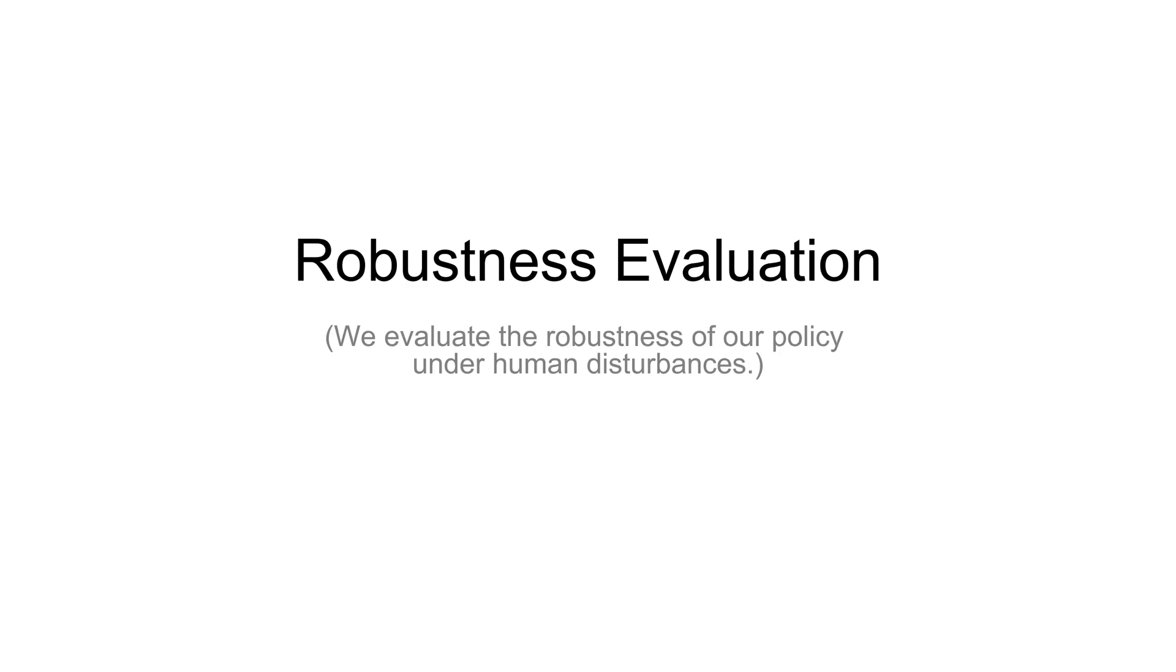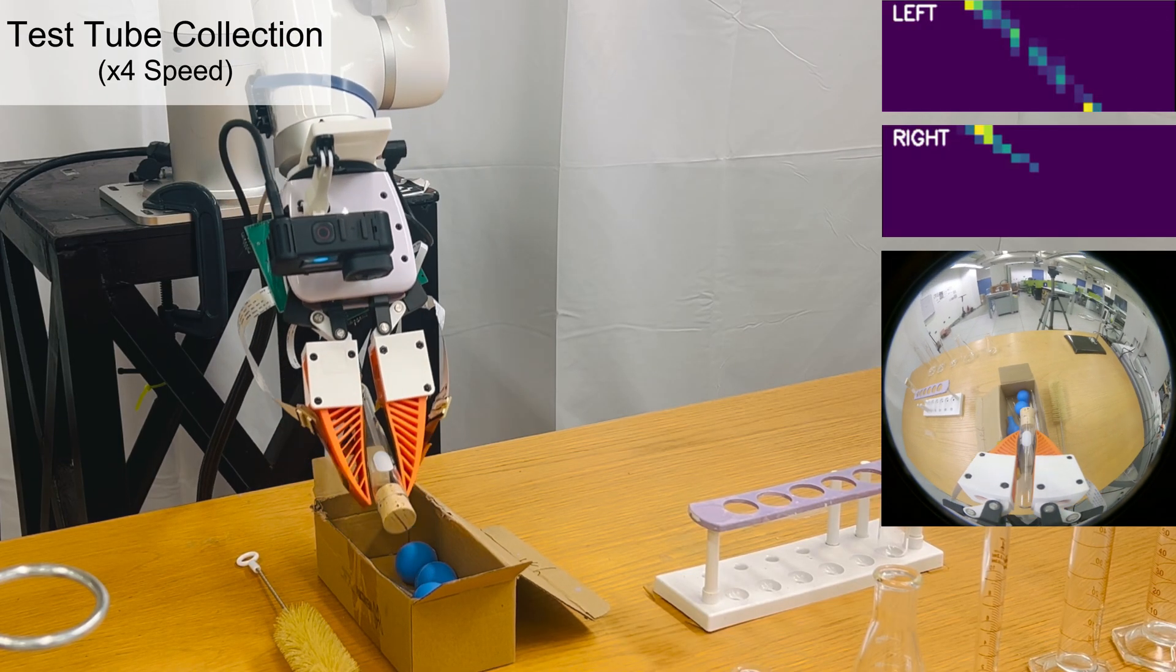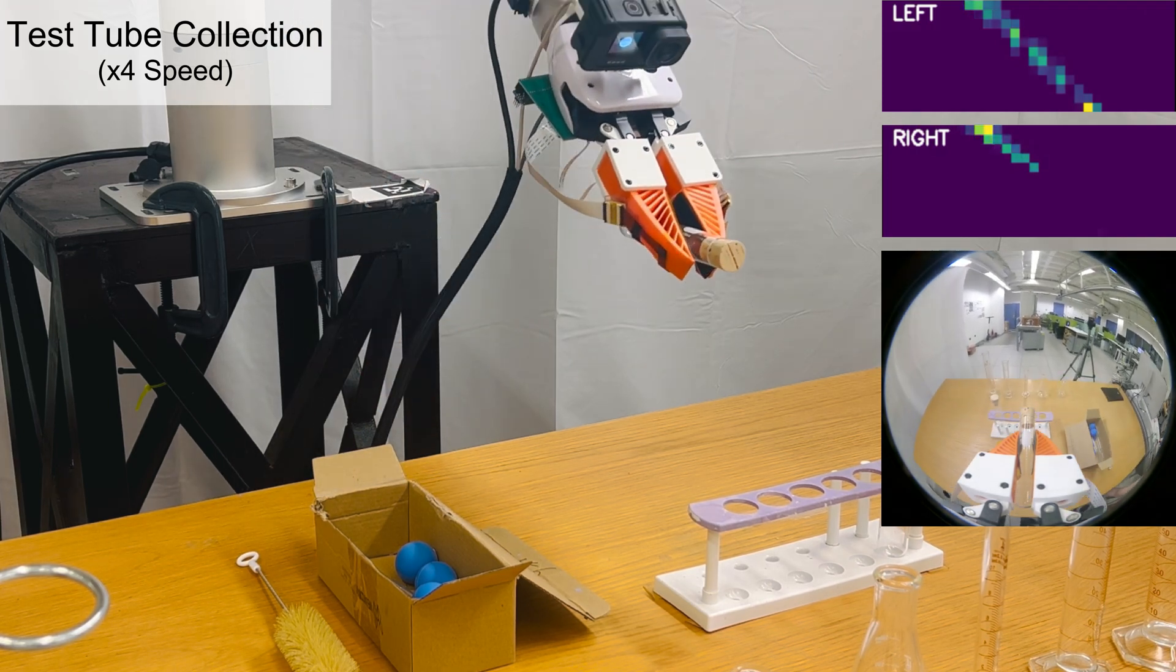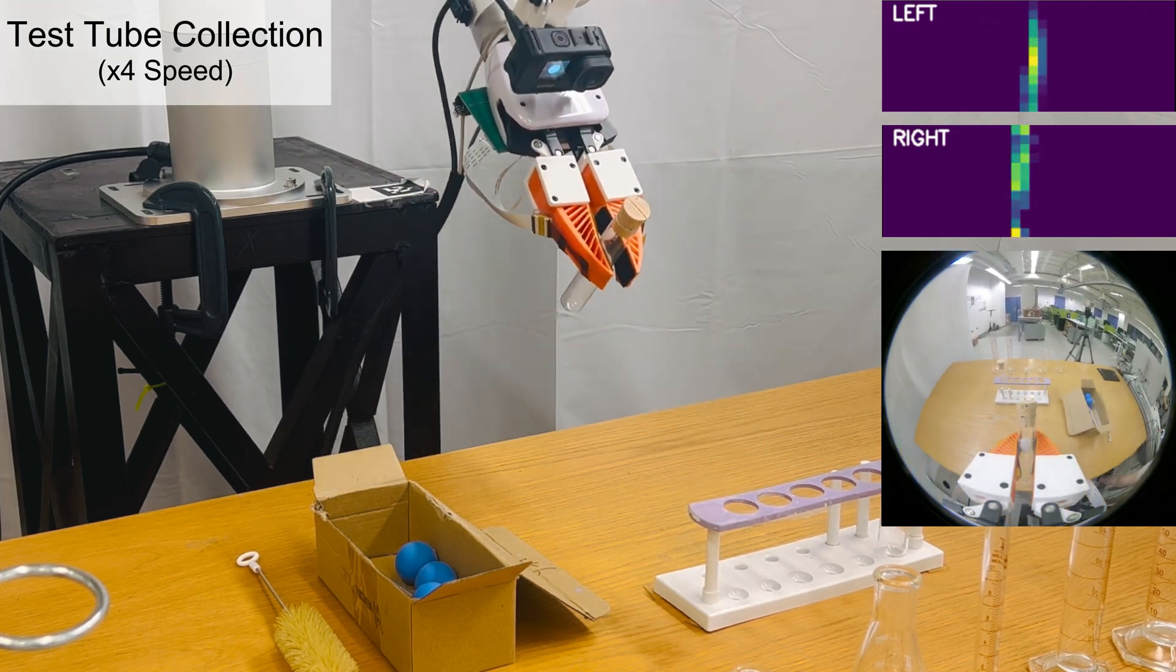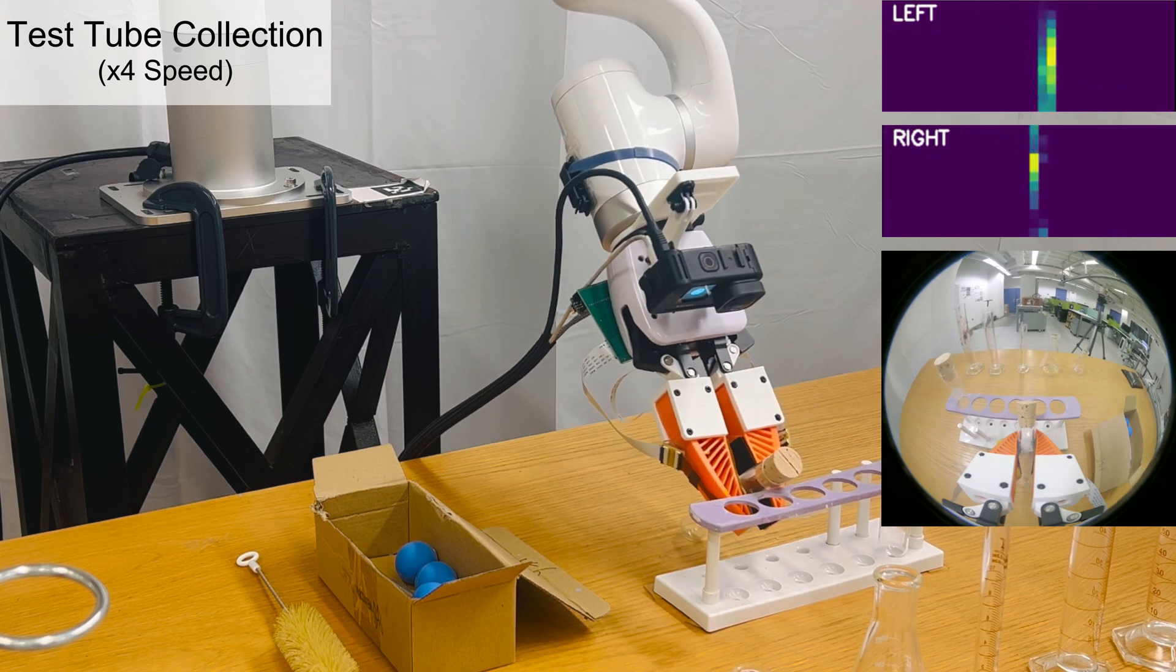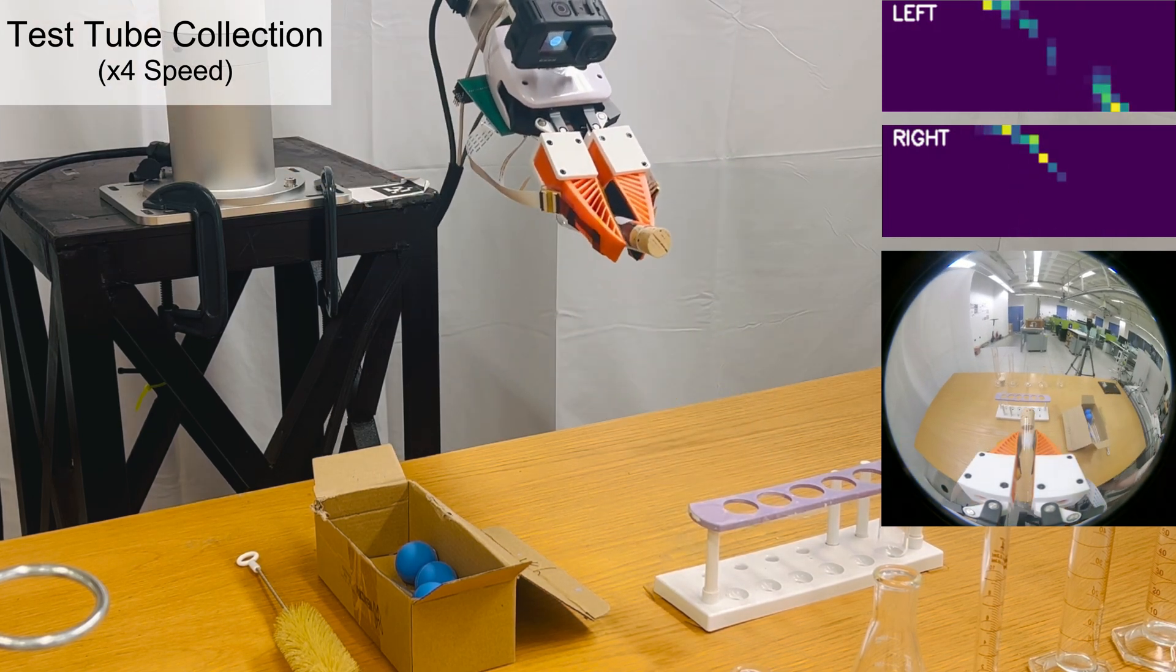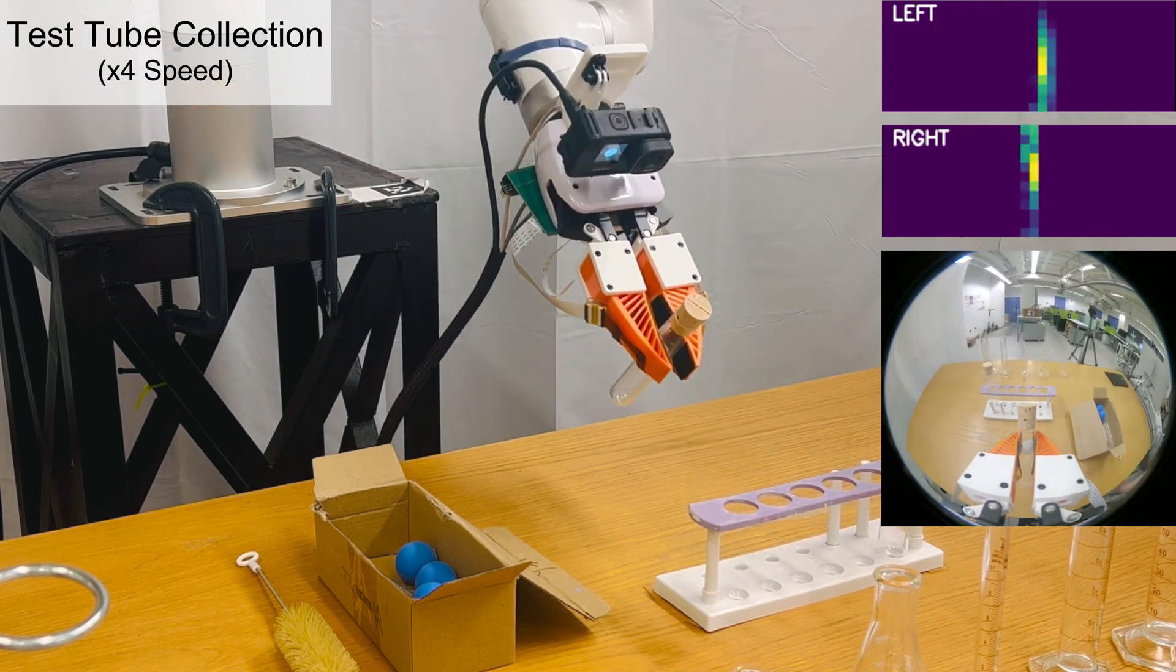We also evaluate the robustness of our policy under human disturbances. During the test tube collection task with human disturbances, the policy uses tactile signals to determine whether to reorient or insert the test tube based on whether the signal is tilted or upright.